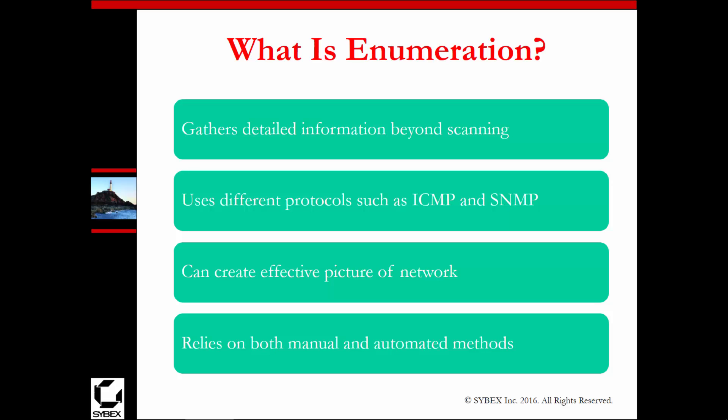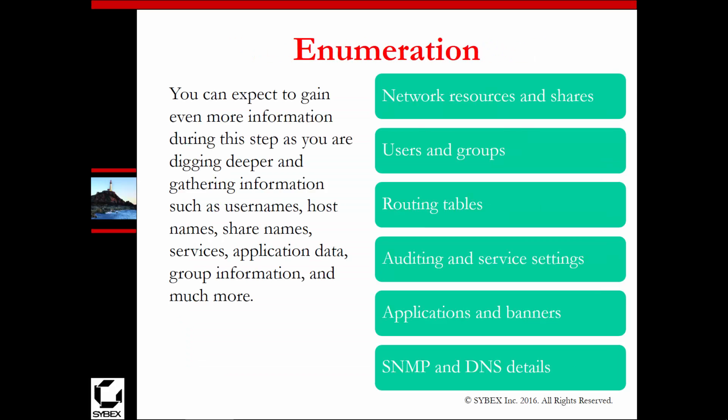Enumeration relies on a combination of automated and manual methods. As we're scanning the network, we start looking at things like TTL — are we getting the appropriate TTL values showing a Windows machine or a Linux machine? The scan may be manual, but the dissemination of information from those scans could be automated, allowing us to quickly determine the host OS.